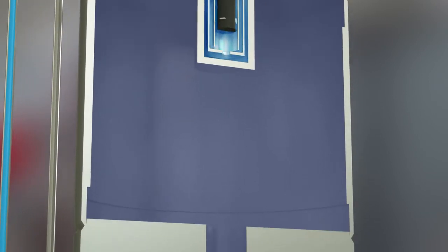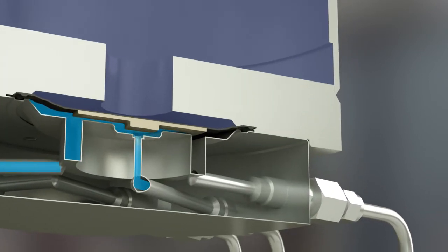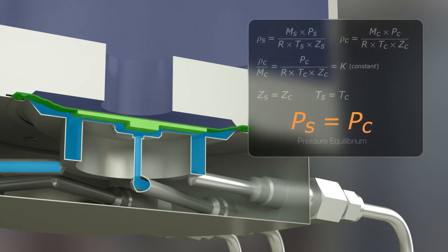As the gas exits the sensor, it then travels beneath the diaphragm before exiting the meter. During operation, the diaphragm movement equalizes the pressure between the gas in the chamber and the sample gas passing through the sensor.